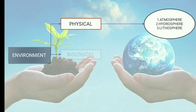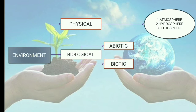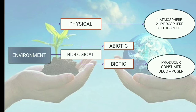The second component is the biological component, which is divided into abiotic and biotic. Abiotic factors are the non-living parts of an environment, including sunlight, temperature, water, soil, and naturally occurring events such as storms, fires, and volcanic eruptions. Biotic components include all living things: producers, which capture energy from the sun; consumers, which rely on producers for food; and decomposers, which convert organic molecules into simple inorganic molecules.